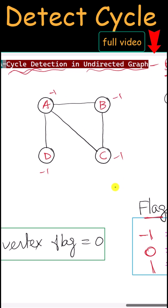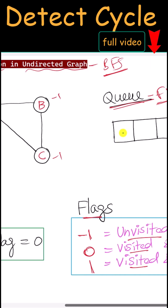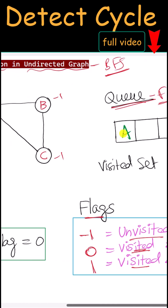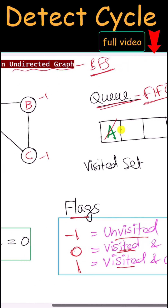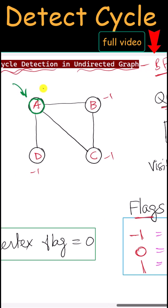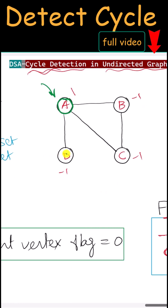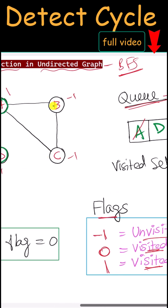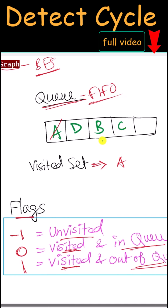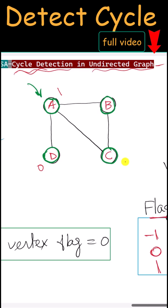Now let's start the traversal. We can start from any vertex, so let's start from vertex A. We put it into our queue and modify its flag to zero because it is visited and in the queue. Next, we remove it from the queue and put it into our visited set, modifying the flag to one. We then visit all adjacent vertices and put them into the queue, so their flags are modified to zero.